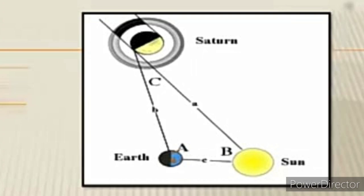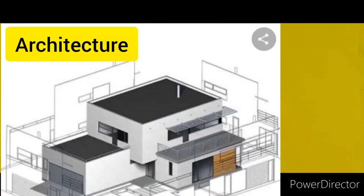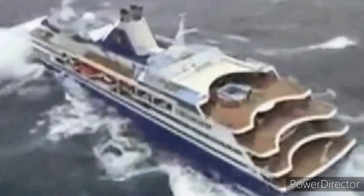Trigonometry also helps to find the distance between celestial bodies. Trigonometry is used in architecture to ensure that buildings are built safely. For example, architects have to calculate exact angles of intersection for components of their structure to ensure stability and safety.